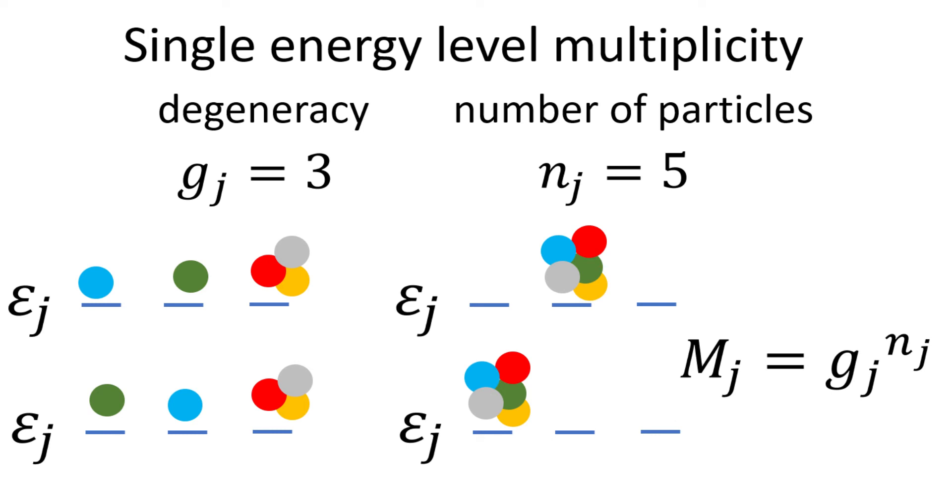Since we are dealing with distinguishable particles, swapping any 2 particles or batches of particles between 2 quantum states are clearly differentiable and counted as different arrangements.